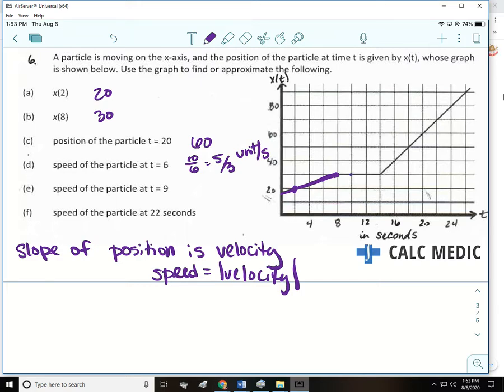And then 9 is right here. So what's the slope at 9? What is the constant? What's the slope? 0. So it just means during that time frame, the particle stands still. And then 22 is right here. We want to know the slope of the line right there. So it looks like we're going up 10 over 2, so 5 units per second.